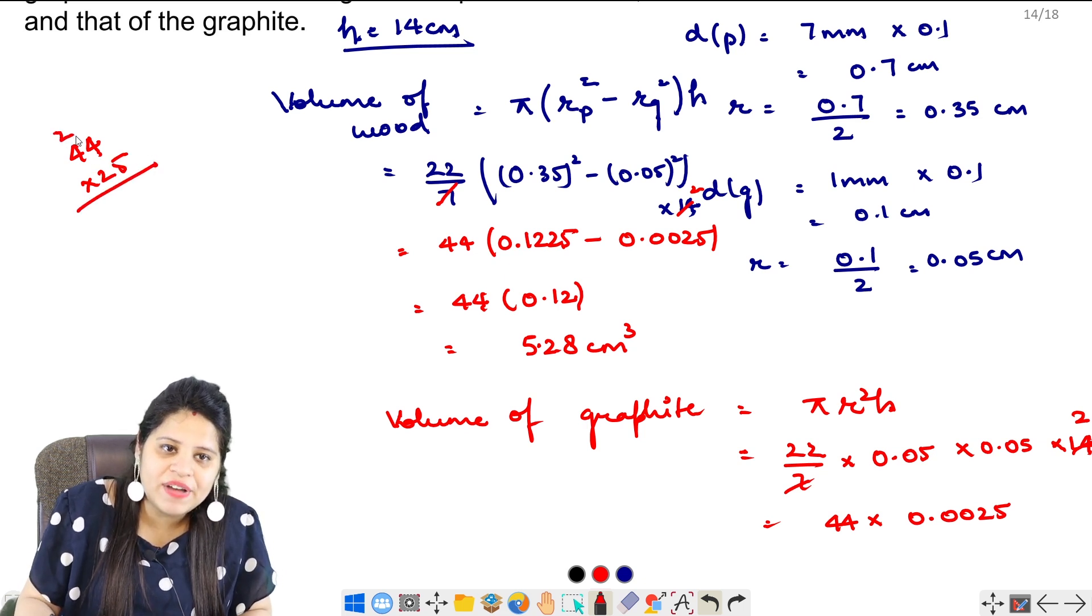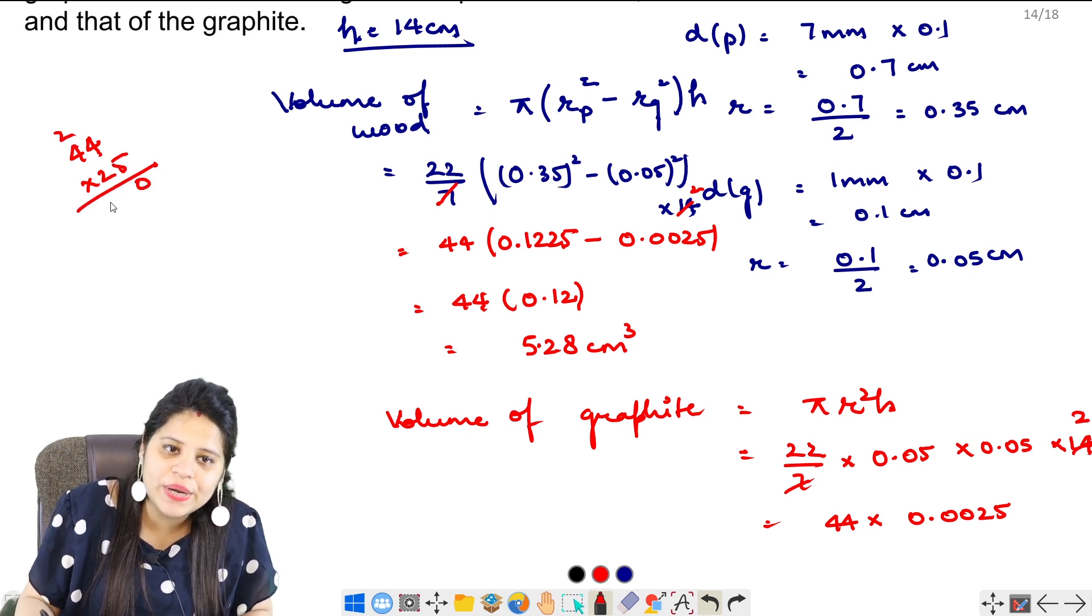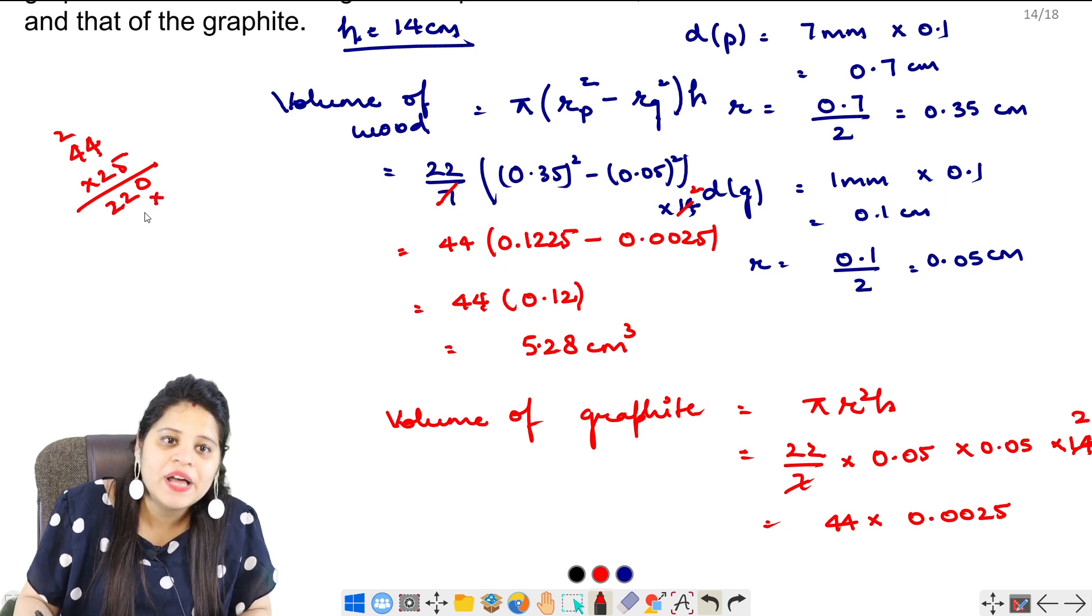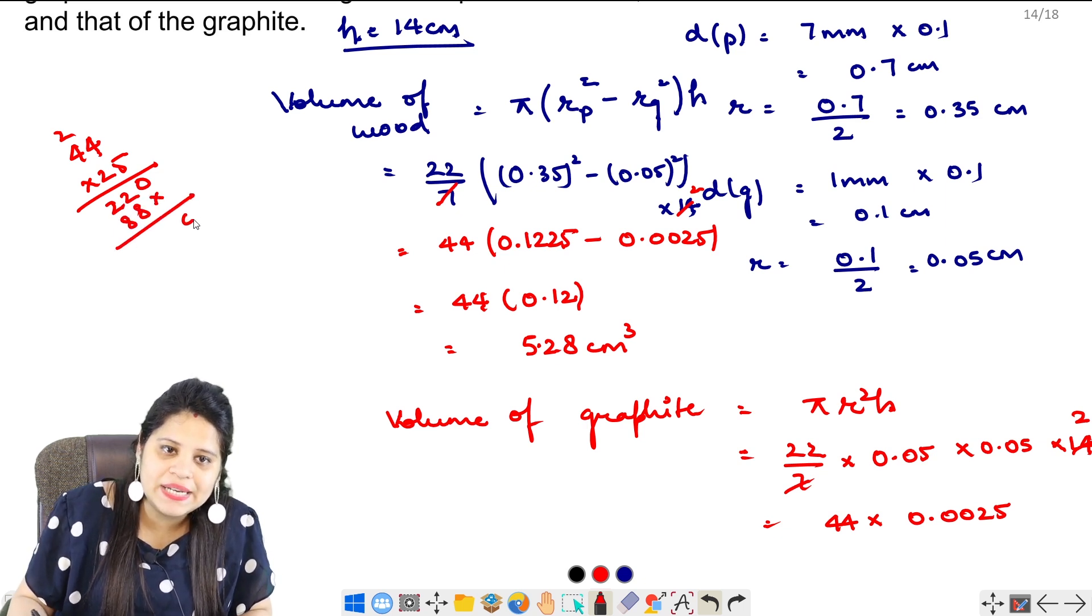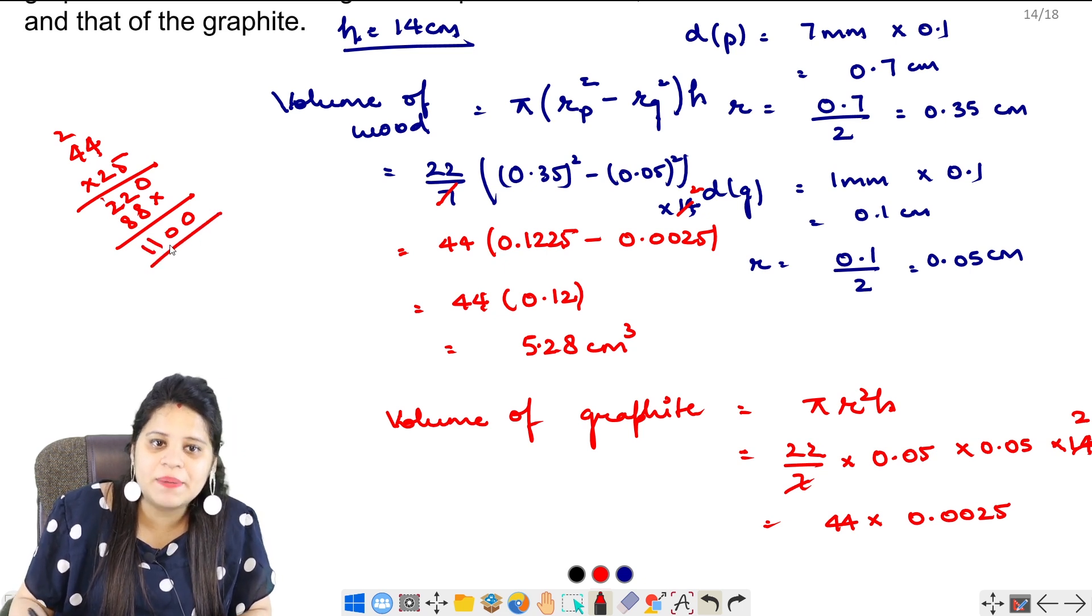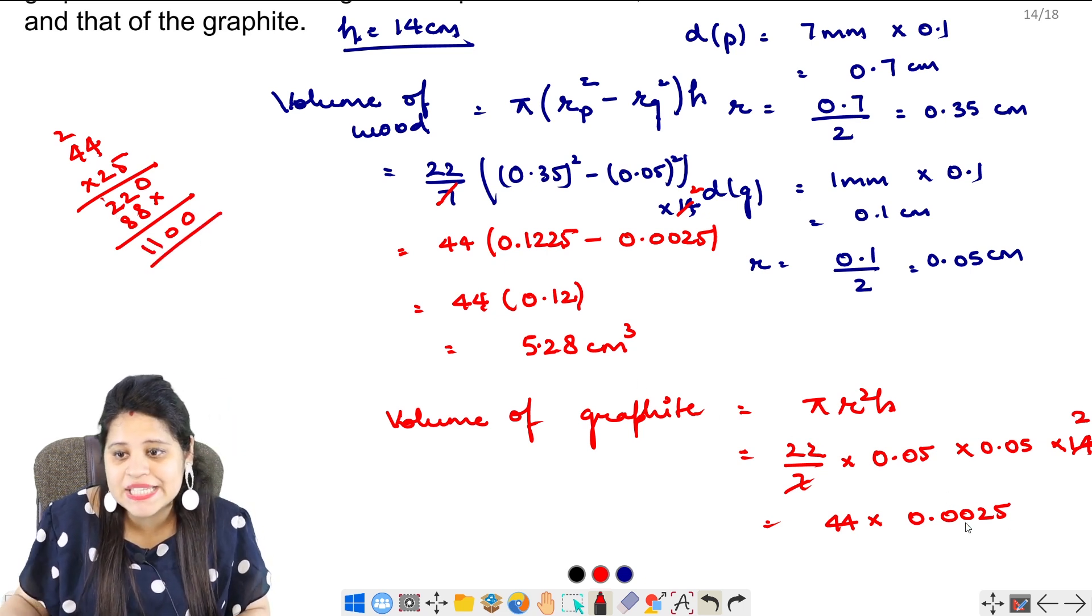44 multiplied by 25. This will be 5, 4's are 20. 5, 4's are 20. Plus 2, 22. 4, 2's are 8. 4, 2's are 8. This is 0, 8, 9, 10. And 8, 9, 10, 11. So this is 1, 1, 0, 0. But 4 digits first. Decimal. So 0.11.